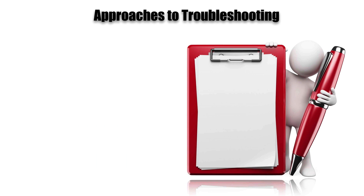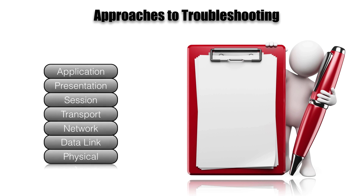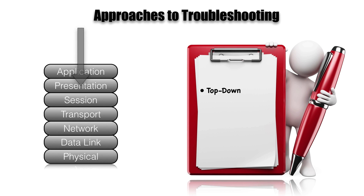Let's talk about some different approaches to troubleshooting. Some approaches are based on the OSI model. For example, we could do top-down troubleshooting. With top-down, we're starting at the application layer or the upper layers and working our way down.